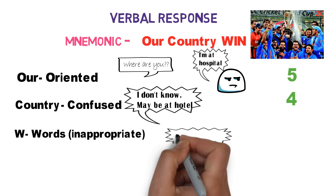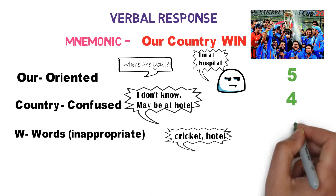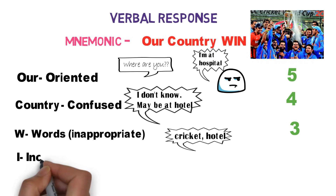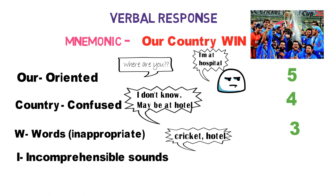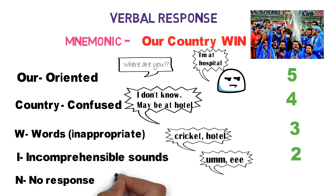W stands for words inappropriately used — for example, if the patient says 'cricket' or 'hotel' out of the blue, the verbal score is 3. I stands for inappropriate sounds, such as 'mmm' or 'ahh,' giving a verbal score of 2. N stands for no response, so the verbal score is 1.